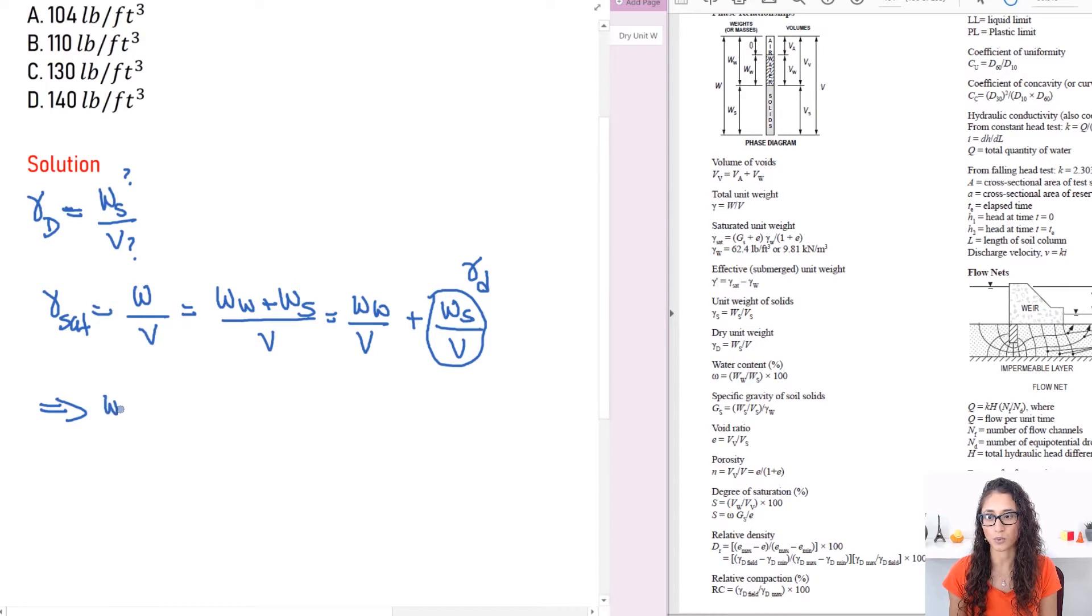So if you guys remember as I mentioned earlier in the previous video we said that the unit weight of the water is equal to, or unit weight in general is equal to, the weight over volume. You guys have to remember this, it's really straightforward. So weight of the water divided by the volume of the water. So if I rearrange this equation and I solve for the weight of the water I get weight of the water is equal to the unit weight of the water times V water.